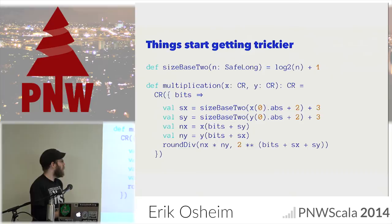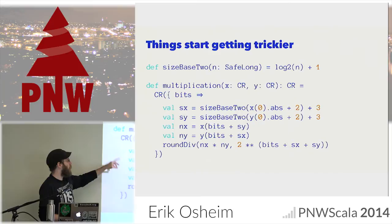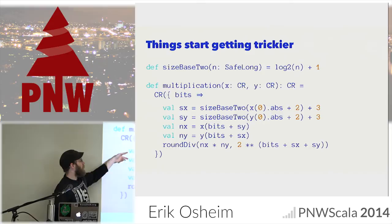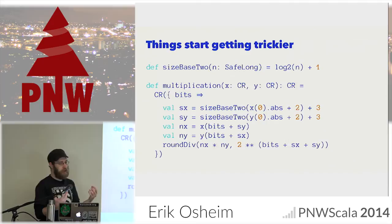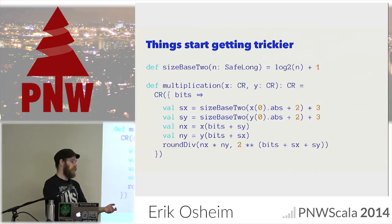Multiplication is a little more complicated — someone had to do numerical analysis to know how much extra precision is needed. Based on how big the arguments are, we determine how much extra precision to request. Sx is the size of x with some extra precision, same for y. We calculate those with extra precision, multiply them, and create a big denominator. The key idea: find how much precision we need from x and y, calculate them, and build our approximation using them. It's all completely lazy — no work is done until someone actually tries to evaluate the computable real.